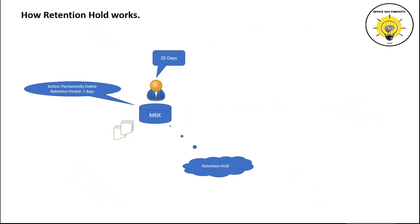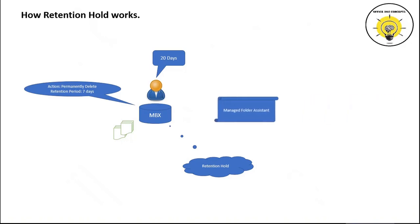In this scenario, as an administrator we can enable retention hold on the mailbox. When a retention policy is applied, the Managed Folder Assistant starts processing the mailbox and emails are moved to online archive or purged permanently. But with retention hold enabled, when Managed Folder Assistant starts processing the mailbox, it will check for retention hold first. If retention hold is enabled, Managed Folder Assistant will bypass that mailbox and the retention policy will not take effect. If retention policy is not taking any action, check whether retention hold is enabled on that mailbox — because if it is, Managed Folder Assistant will not process it.